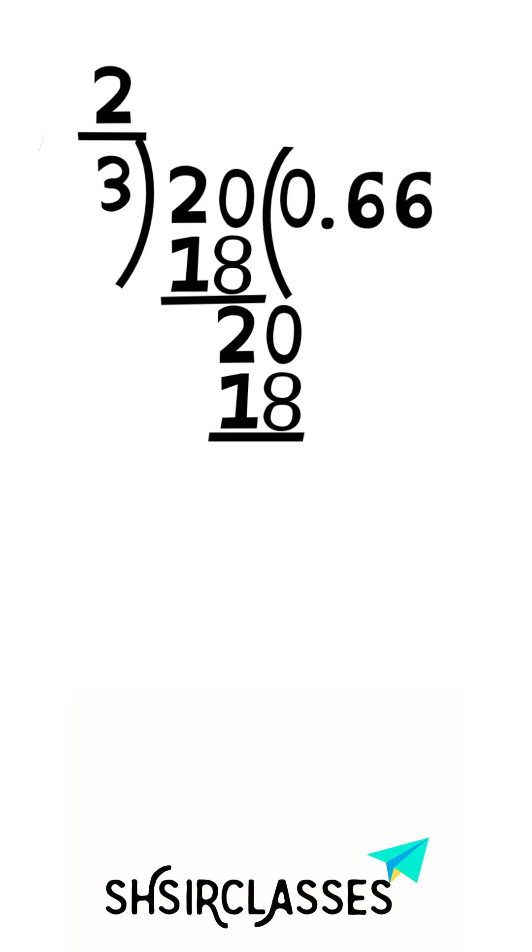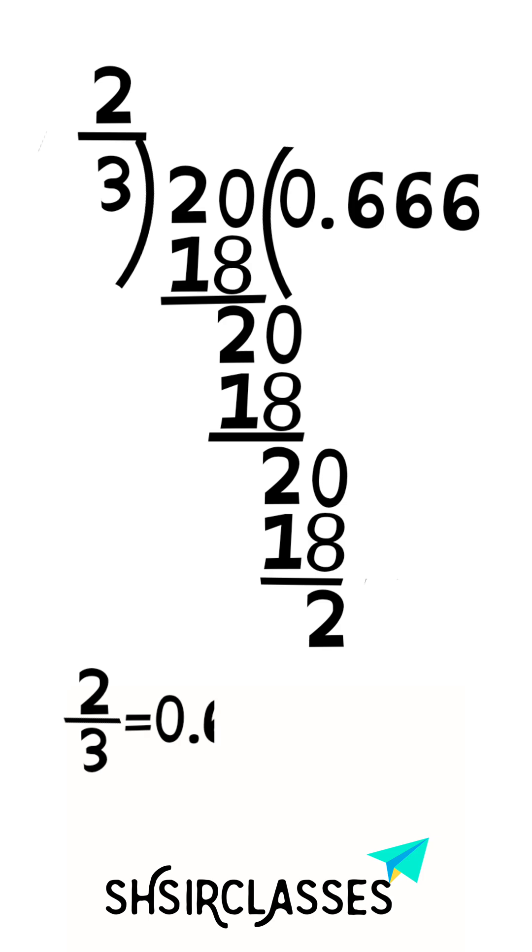Again we can write zero for the decimal. 3×6=18. Here we get 6 as a repeating digit and it will be continued infinitely. So 2/3 equals 0.666... and continues, which equals 0.6 bar.